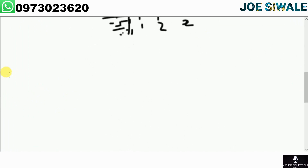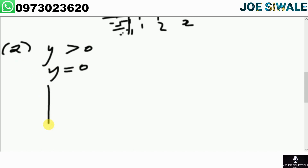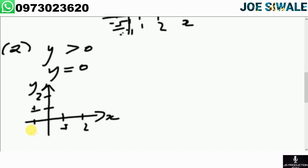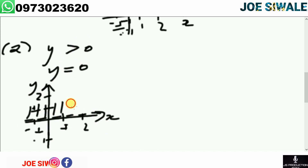For the second example, I have y is greater than 0. I draw my y-axis and x-axis with values 1, 2, negative 1. y equals 0 is the x-axis. Since the sign is greater than, the line must be a dotted line, and I need to shade on the upper side. That represents y is greater than 0.